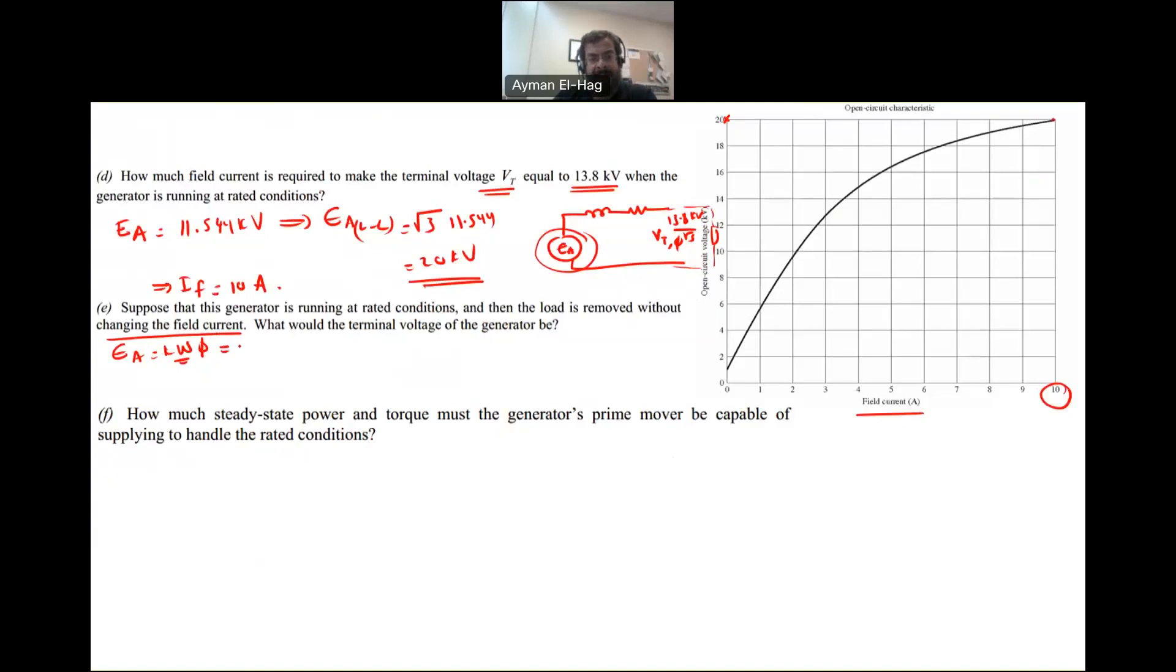If Ea equals 20 kV line-to-line, then your Vt will equal 20 kV line-to-line, or 11.544 kV phase voltage. Why? Because at no load condition, Ia equals zero. If Ia equals zero, your Vt equals Ea. In the generator, Ea is fixed and linked to the field. If I don't touch the field, it stays the same, and V-terminal will follow this.